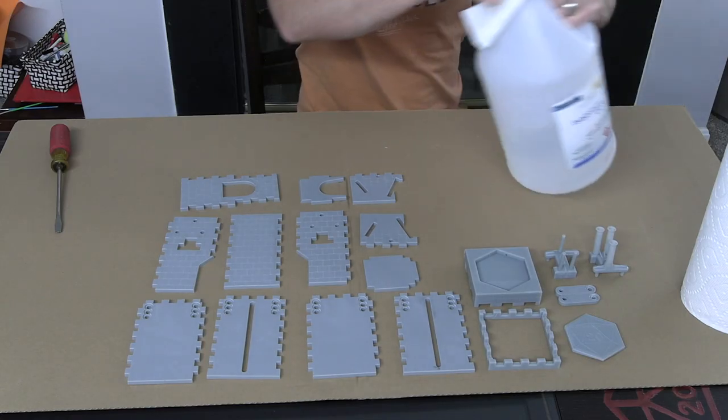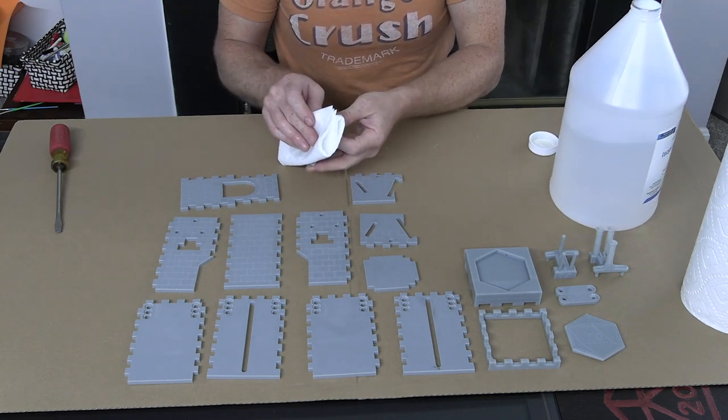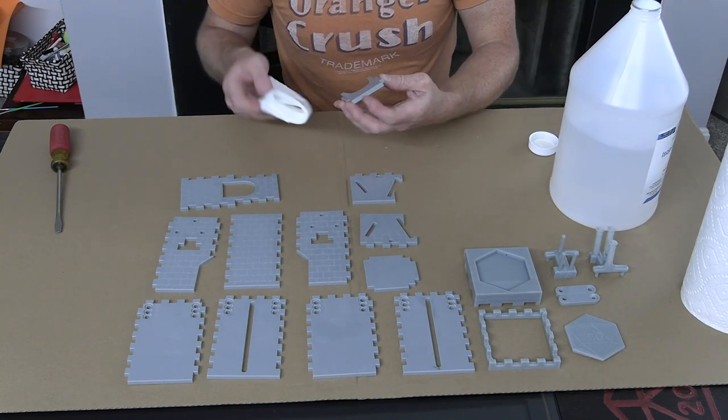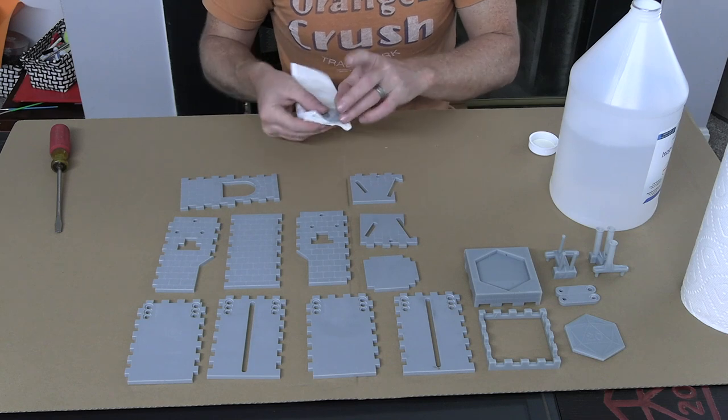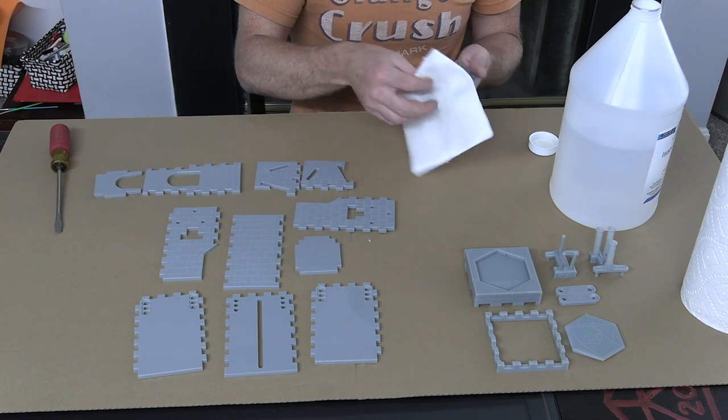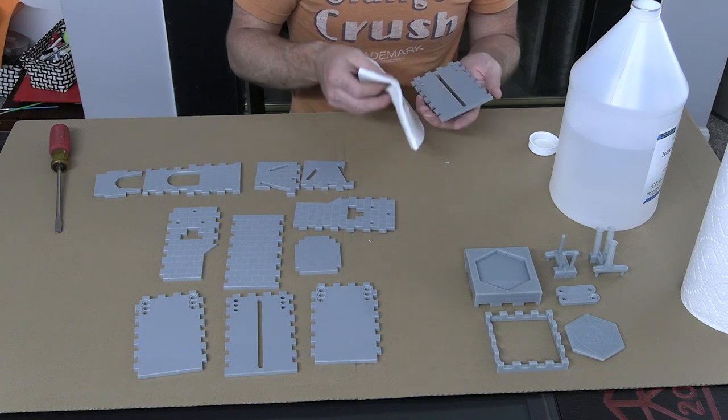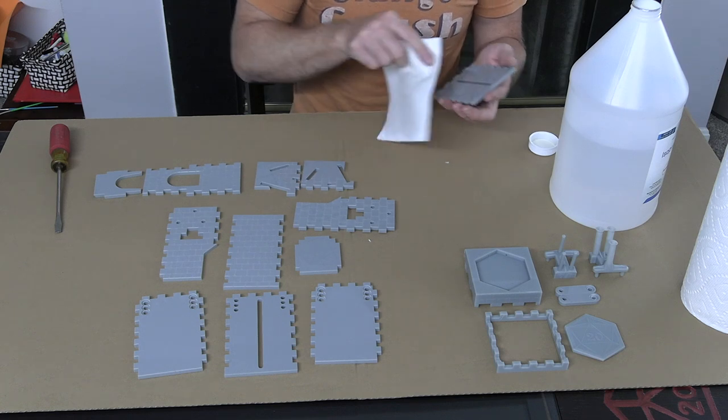Now that everything's apart, you're going to want to get a clean rag or paper towel, soak it with some isopropyl alcohol, and use that to clean up all the individual pieces. Anything that was cut on the laser cutter will have a little bit of residual residue from smoke and dust, but the alcohol should remove it easily.